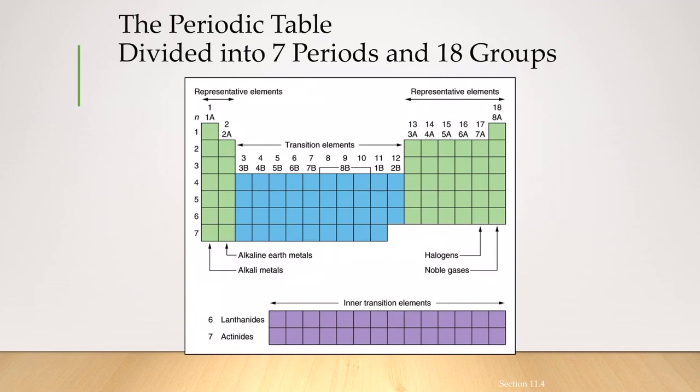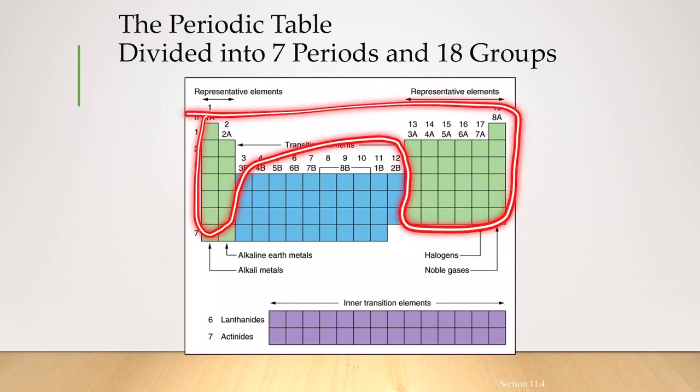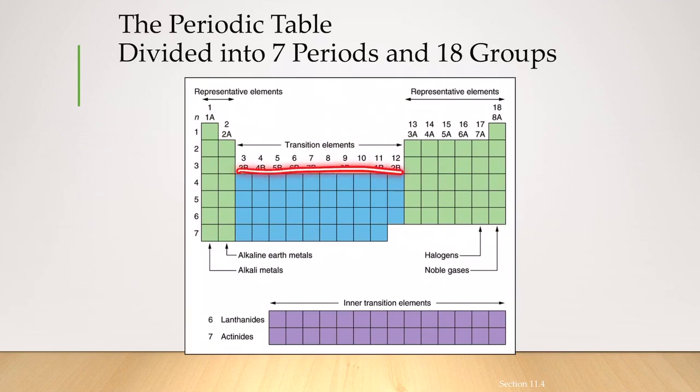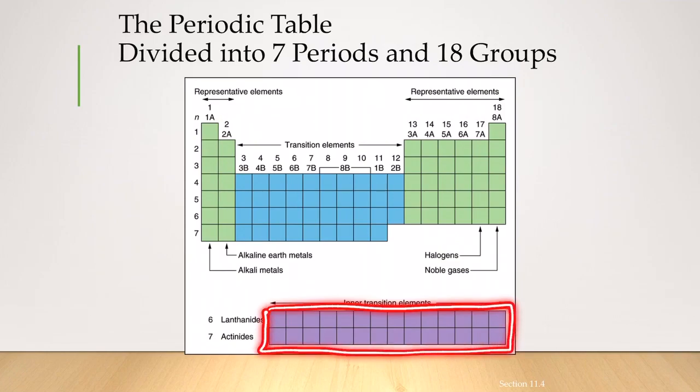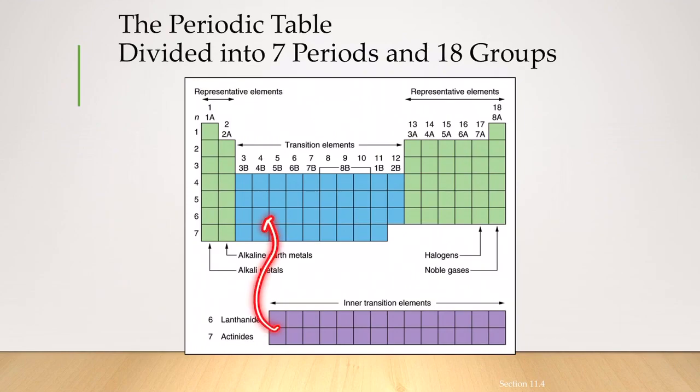So you can divide the periodic table into three different sections. The first is the representative elements, which is the column represented in green. And the second one is the transition elements, which are mostly metals. And the third one is the inner transition elements, which is going to find a place inside the transition elements.